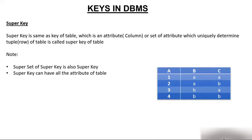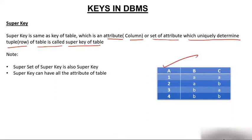Super key is the same as the key of a table. The definition of super key: an attribute or set of attributes which uniquely identifies a tuple (row) of a table is called a super key. The difference is that a super set of a super key is also a super key. If A is a super key, then AB is also a super key, and ABC is also a super key.